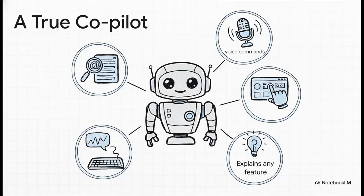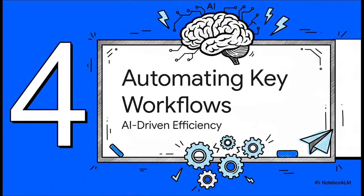So this makes it a true co-pilot. It gets what you're saying, even if you have typos. It can explain any feature on the screen. It can control the interface to get work done. You can use your voice, and you can instantly find anyone with a simple at-mention. It's incredibly intuitive. So how does this amazing AI co-pilot actually translate into real-world efficiency? Let's look at how it takes these key business workflows that are normally super manual and just automates them.